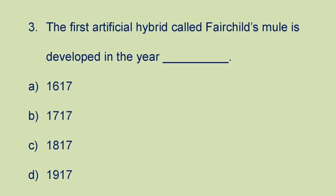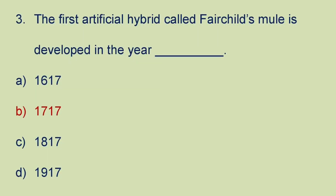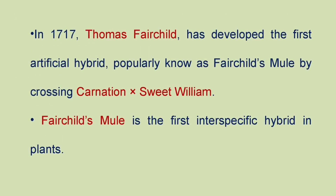Next question: the first artificial hybrid called Fairchild's Mule was developed in the year A) 1617, B) 1717, C) 1817, or D) 1917. The answer is Fairchild's Mule was developed in 1717. In 1717, Thomas Fairchild developed the first artificial hybrid, popularly known as Fairchild's Mule, by crossing Carnation with Sweet William. It is the first interspecific hybrid in plants.